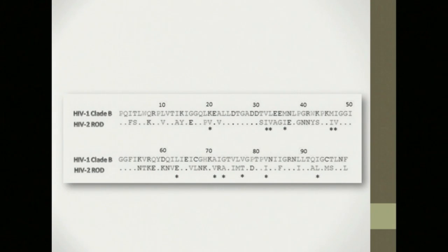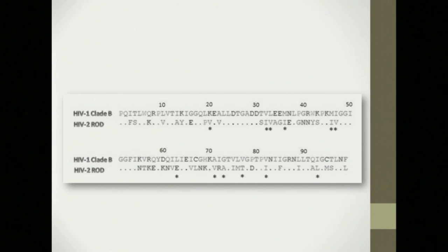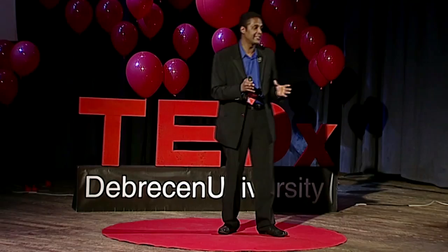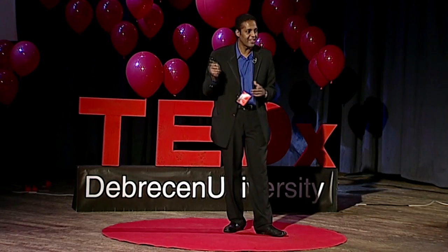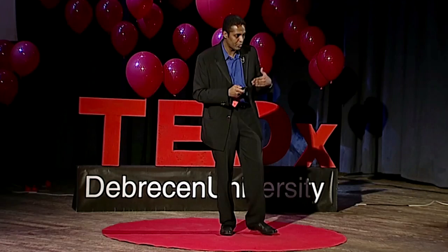We know there is a 40% to 60% difference in the genetic sequence between HIV-1 and HIV-2. As an example: the viral protease — the enzyme that matures the viral proteins — contains certain amino acids, which are the building blocks of proteins, that are actually present in HIV-2 and are associated with those treatment resistance mutations. So anyone in their right mind would question whether the drugs used to treat HIV-1 can actually block HIV-2. And that is what we set out to do.